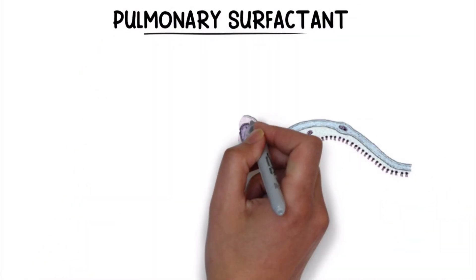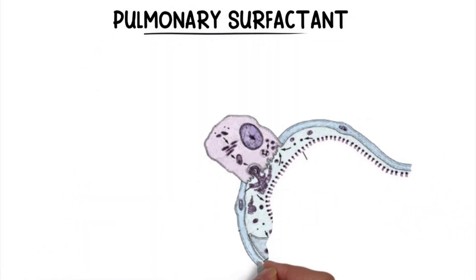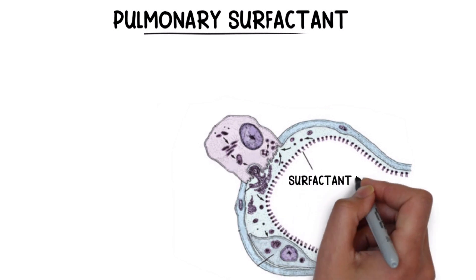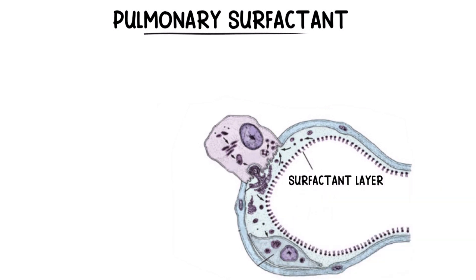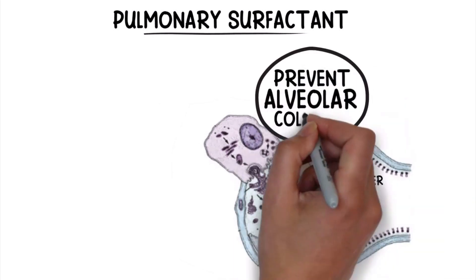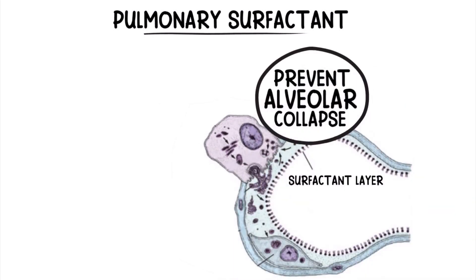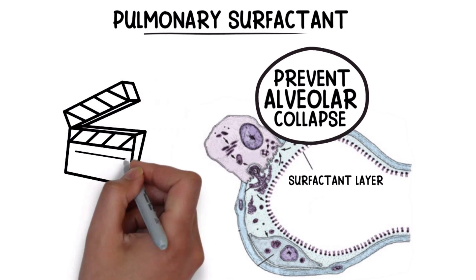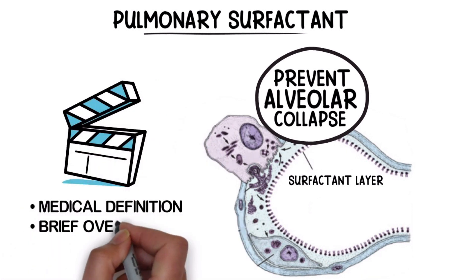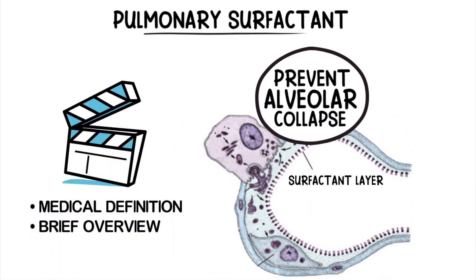Pulmonary surfactant is a substance that forms a layer over the surface of alveoli in the lungs to reduce surface tension and prevent alveolar collapse. We created this video to cover the medical definition and provide a brief overview of this topic.